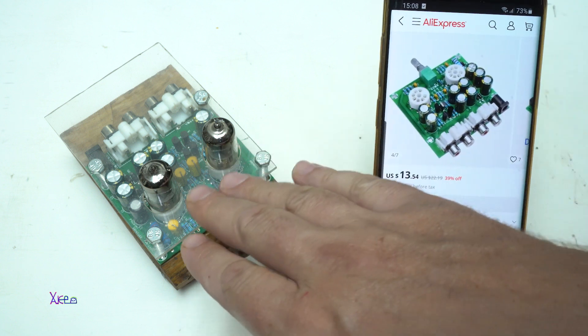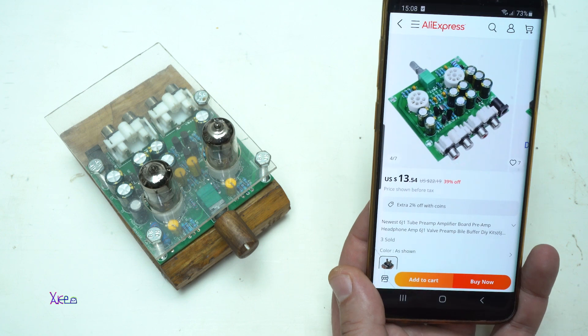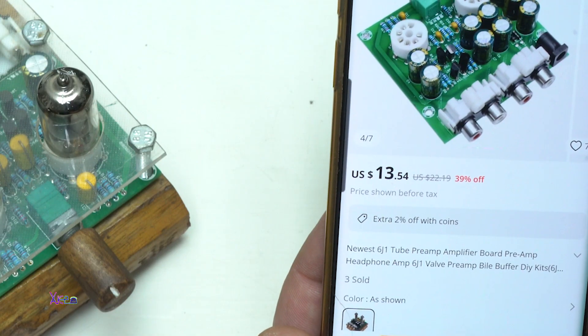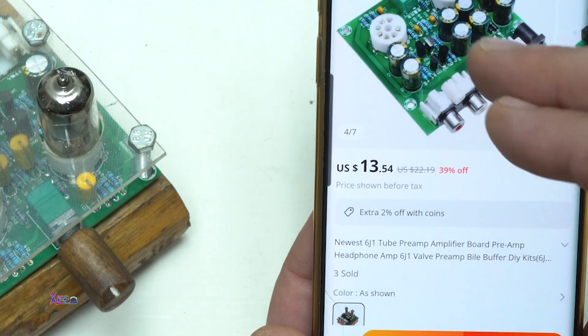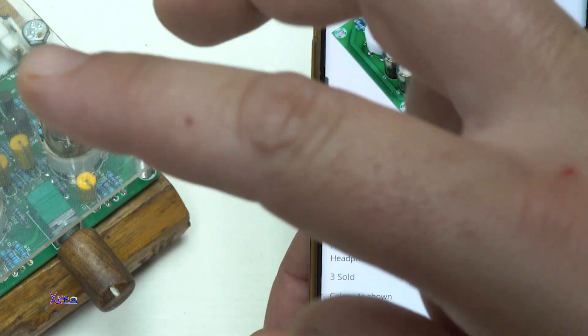This preamplifier, as I said, comes as a kit. You need to solder all electronic components. I bought this kit maybe five or six years ago, and right now on AliExpress it's $13 with two tubes.